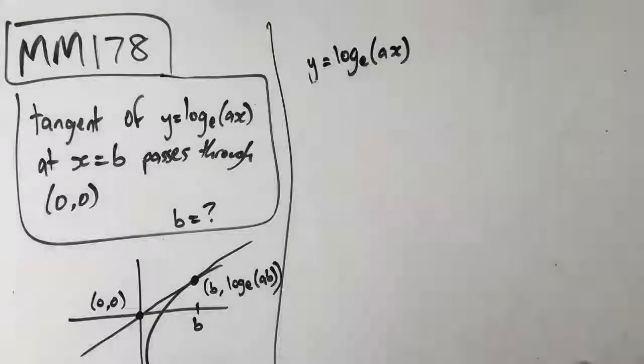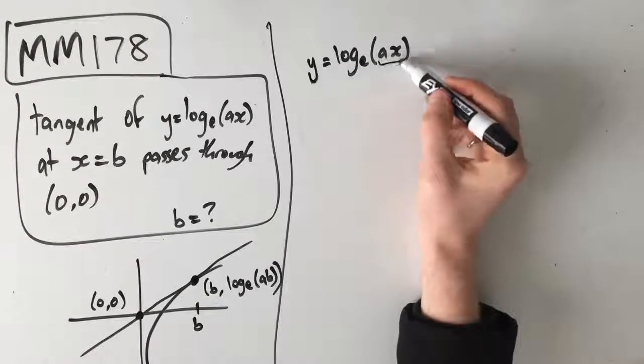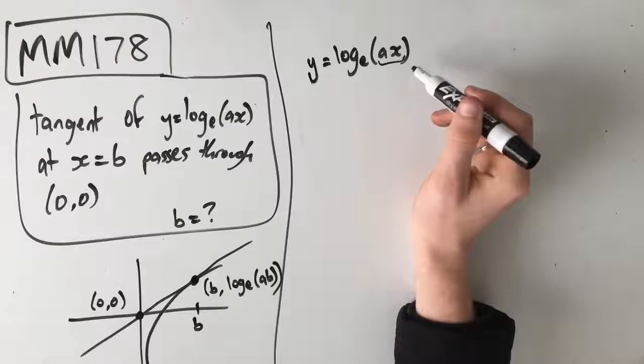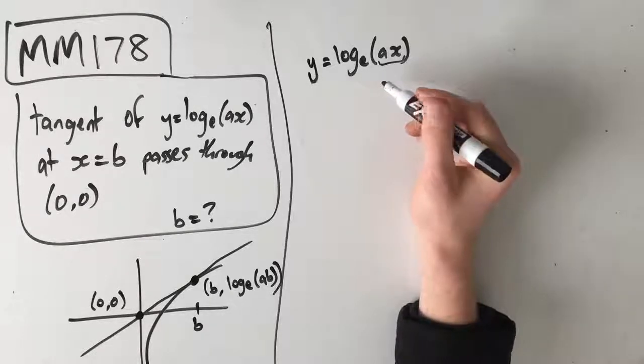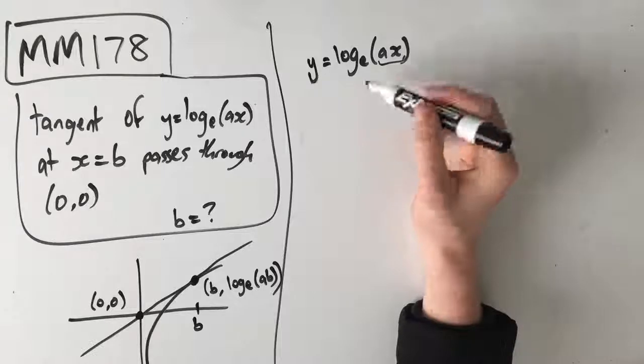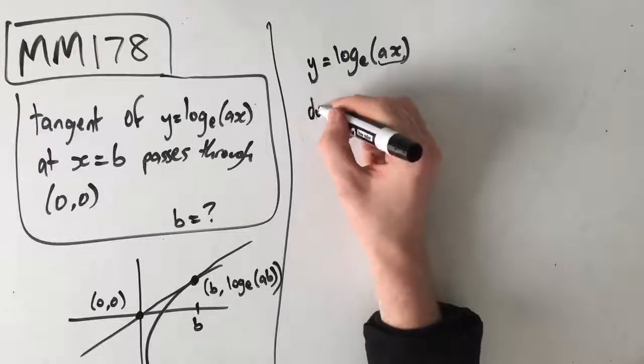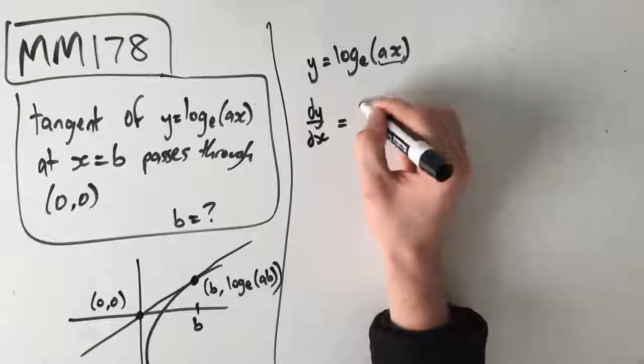We can see that our ax is a function within this log_e function. You can also just do this in your calculator. Find the derivative of log_e(ax). What you'll actually get is dy/dx is equal to 1 over x.